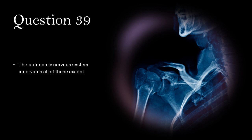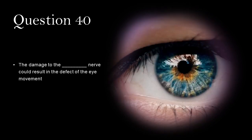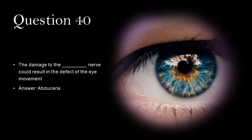The autonomic nervous system innervates all of these except skeletal muscles. The damage of abducens nerve could result in the defect of the eye movement. Which of the following is not a region of the spinal cord? Pelvic.